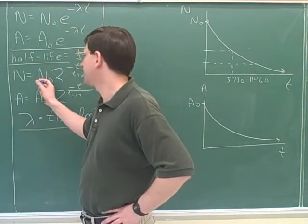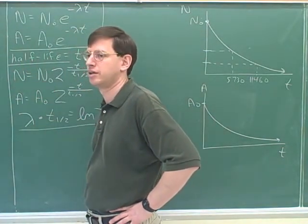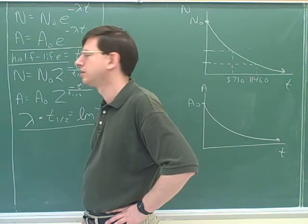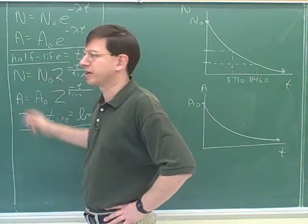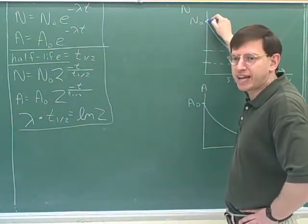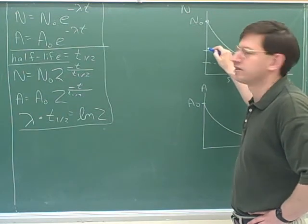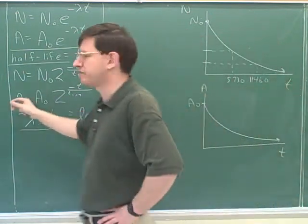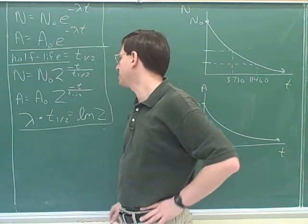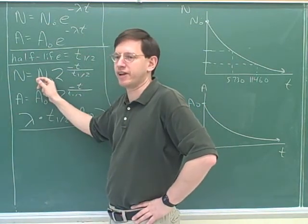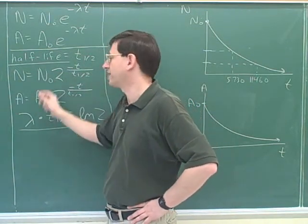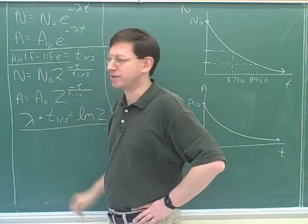By the way, who would be bigger, N or N0? N0. N0 is always bigger because N0 is the original maximum number of nucleuses. It's all downhill from there, right? And A0 is bigger than A. So when you're using these equations, you have to know what to plug in for N and what to plug in for N0. We always plug in the bigger number for N0 because that's the original number.